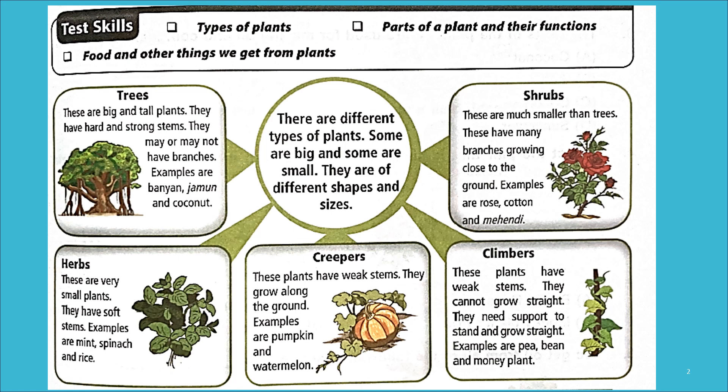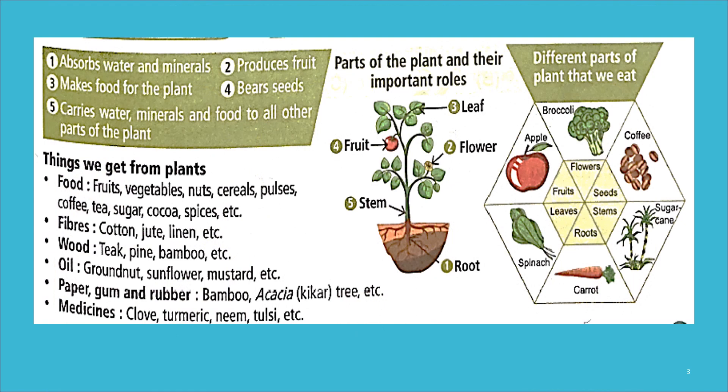Creepers are plants with weak stems that grow along the ground — for example, pumpkin and watermelon. Then come climbers — these plants also have weak stems; they cannot grow straight and need support to stand and grow, which is why they are called climbers because they climb upon an external support. Examples: pea, bean, money plant, and grape vine.